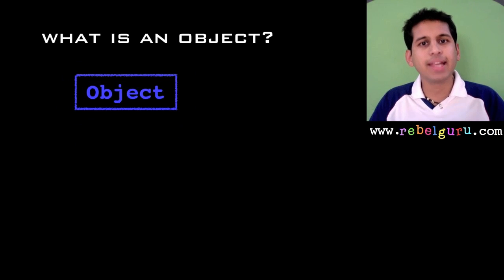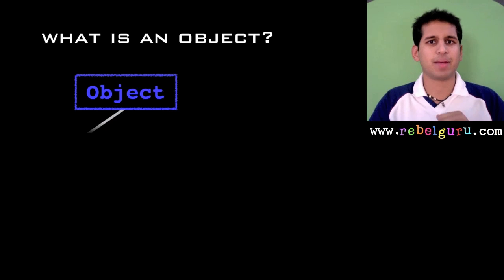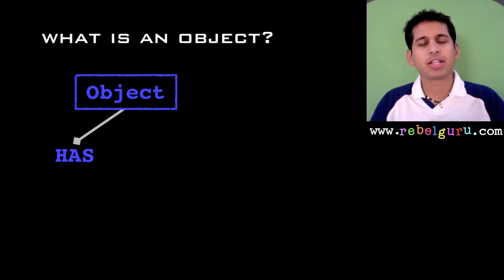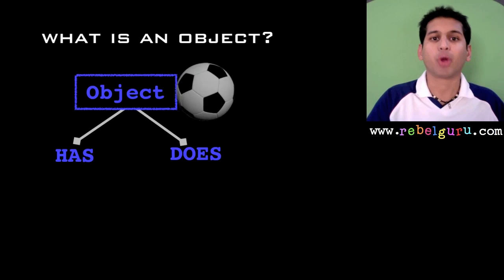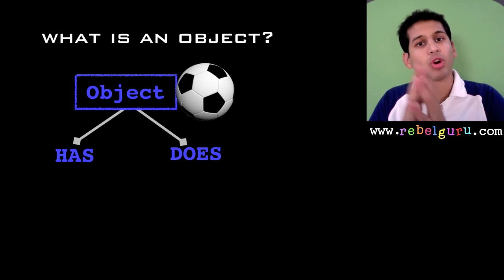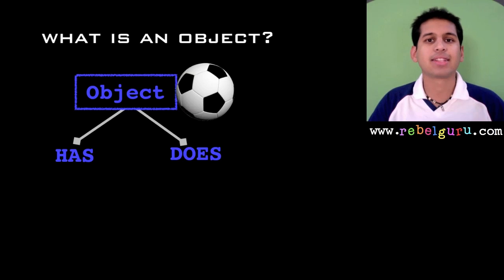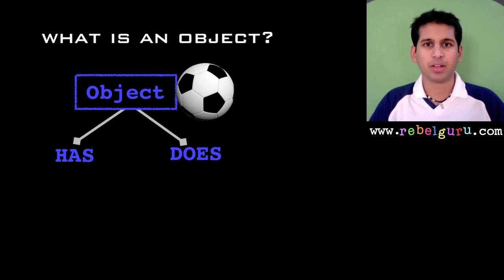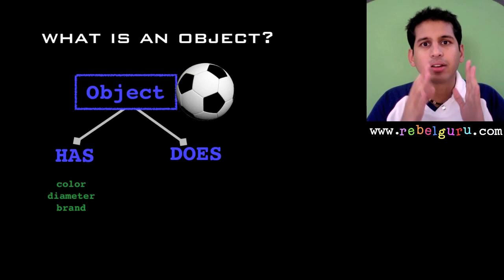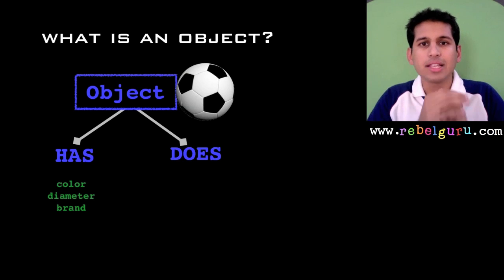When you describe objects in English, how do you describe them? You typically describe objects in two ways: you say what the object has, or the properties of the object, and you say what the object does, or the behavior of the object. Let me take an example and clarify this. My object is going to be this football. What does this object have? This object has color, diameter, and brand.